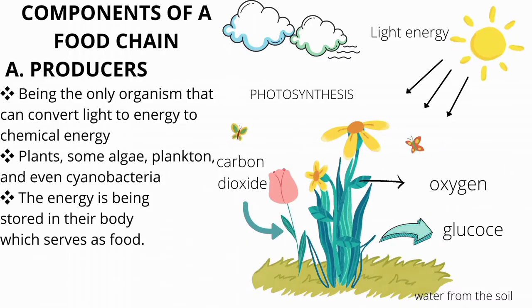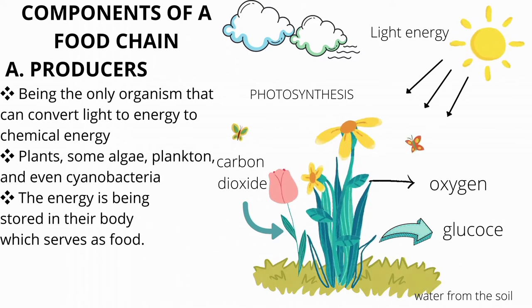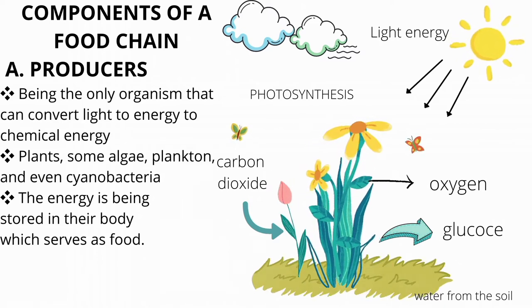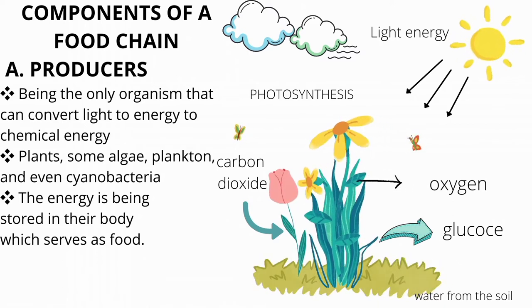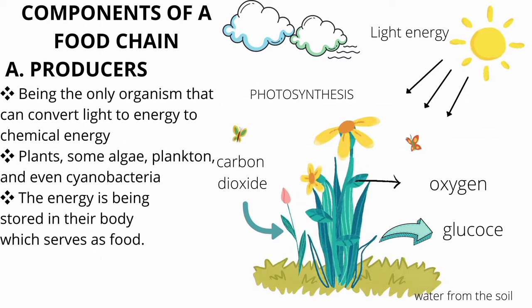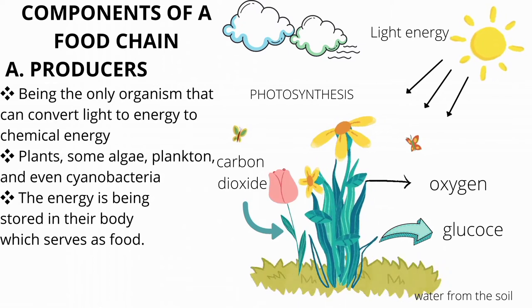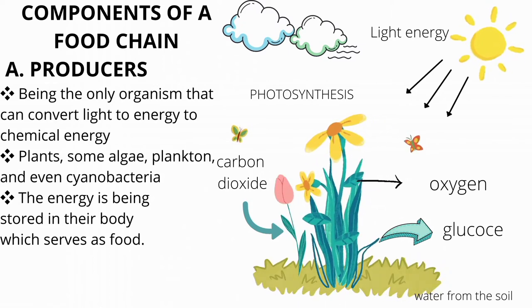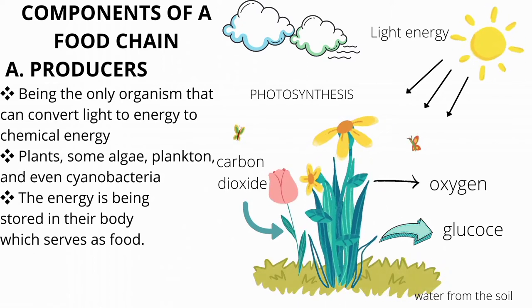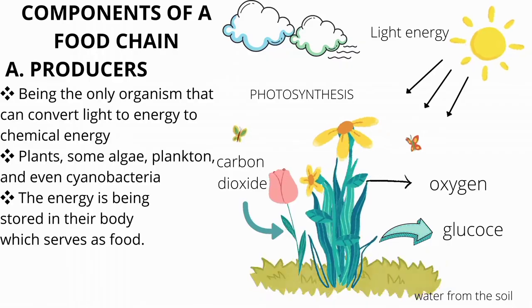Components of a food chain: producers are the only organisms that can convert light energy to chemical energy — plants, some algae, plankton, and even cyanobacteria. The energy is stored in their body, which serves as food.